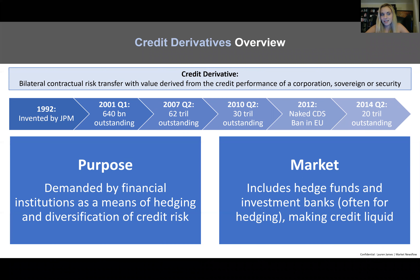Looking at the timeline, credit derivatives were invented in 1992 and were pretty quiet for a while. By the early 2000s, issuance went skyrocketing — between 2001 and 2007 it was up roughly 100-fold. However, they became a focal point for the financial crisis because you can effectively sit synthetically short a bond you don't have to own, creating misaligned risks and incentives.